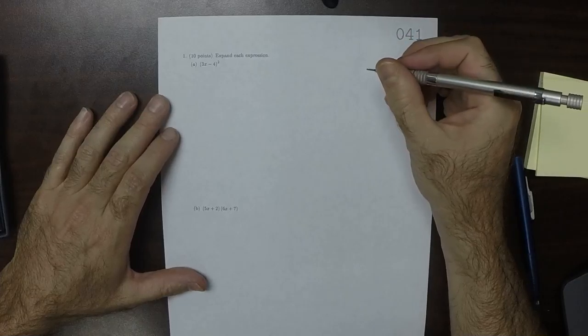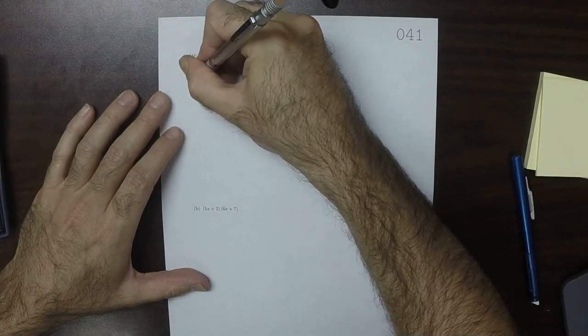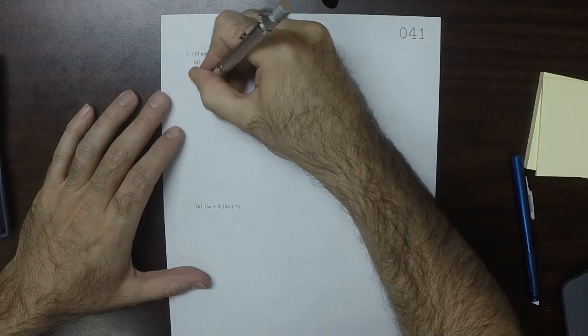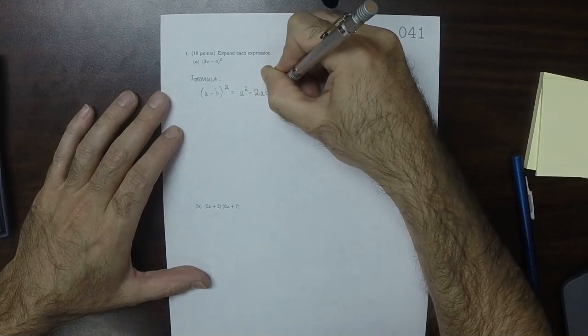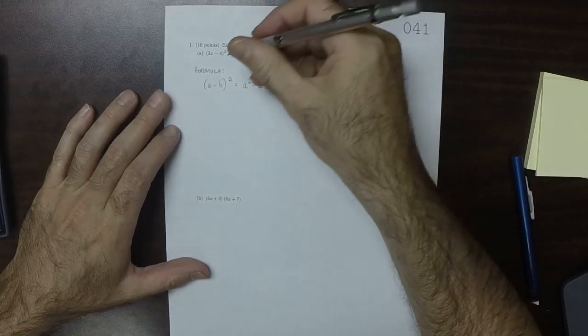One is to recall the formula that A minus B all squared is A squared minus 2AB plus B squared. So I'll do that.